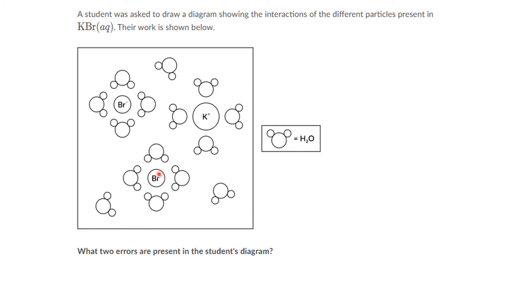The second error is that the bromide ion should be bigger than the potassium ion, due to periodic properties. If you want to know more about this, you can watch the topic on periodic properties. In this figure, the bromide ion is shown smaller than the potassium ion, which is incorrect. So these are the two errors that can be interpreted from this diagram.